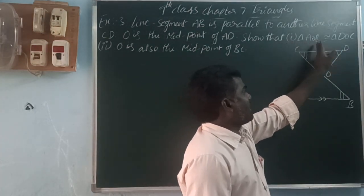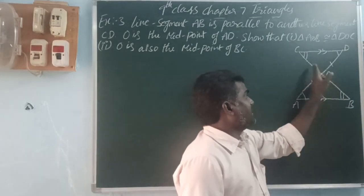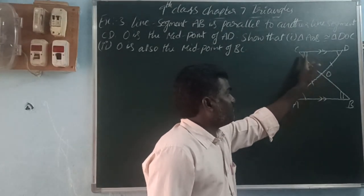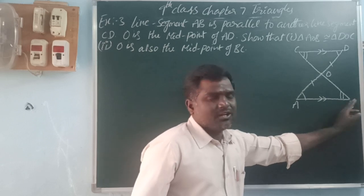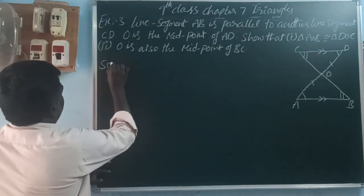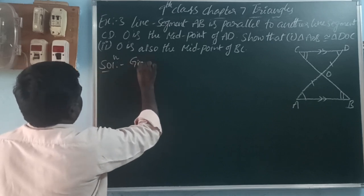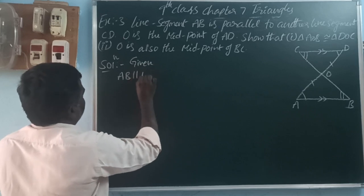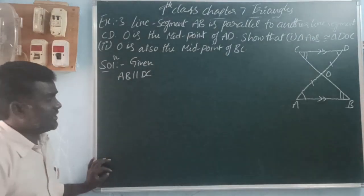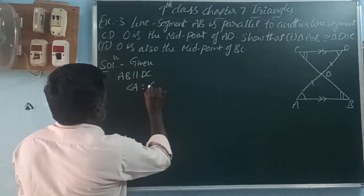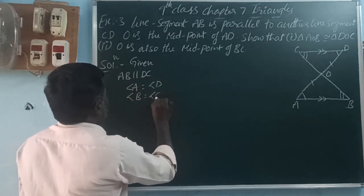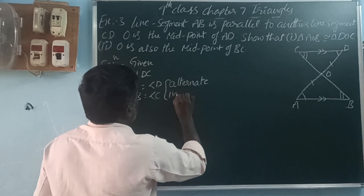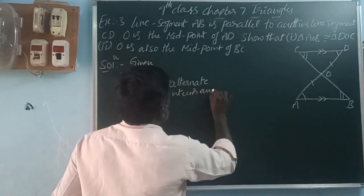Next, we try to prove that triangle AOB is congruent with triangle DOC. O is also the midpoint of BC. Since AP is parallel to DC, angle A is equal to angle D and angle B is equal to angle C by alternate interior angles — alternate interior angles are equal.